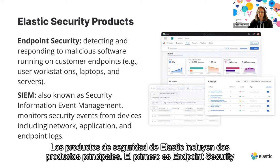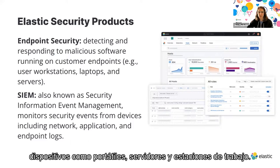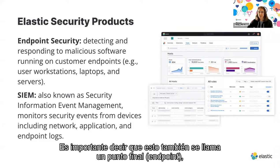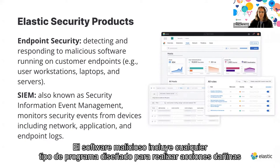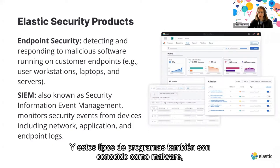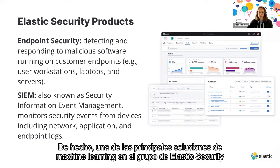Elastic security products include two core products. The first is endpoint security, which encompasses detecting and responding to malicious software running on customers' devices — laptops, servers, and workstations — basically any device a company has that a user might interact with. This is also called an endpoint. Malicious software includes any type of program designed to perform harmful or undesired actions on a system, also known as malware. One of our core machine learning solutions is labeling files on a given endpoint as malicious or benign.